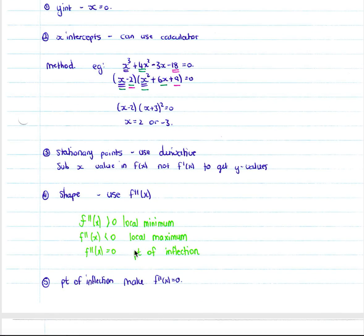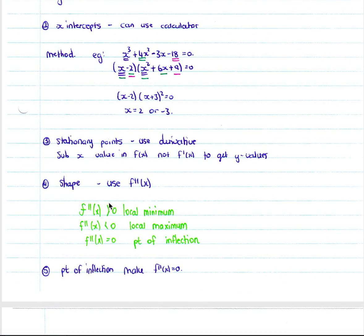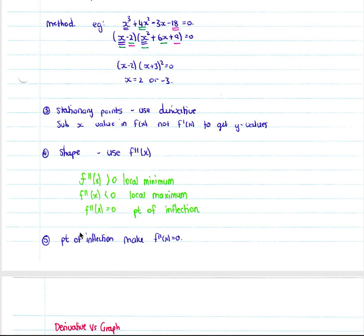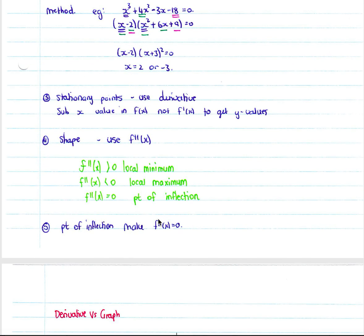When dealing with the shape of a cubic, we use the second derivative. If f double dash (x) is greater than zero at a turning point, it's a local minimum. If f double dash (x) is less than zero, we have a local maximum. If f double dash (x) equals zero, we have a point of inflection. To find a point of inflection, simply make your f double dash (x) equal to zero and solve for x.